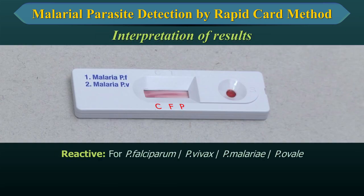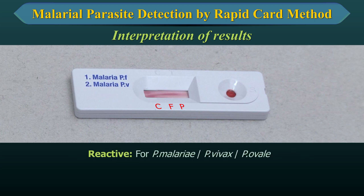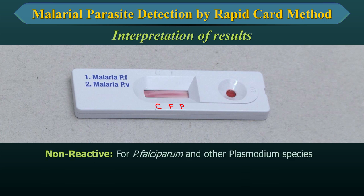Reactive results: Appearance of 3 pink colored lines, one each at P or Pan region, F or Plasmodium falciparum region, and C or control region indicates that the sample is reactive for Plasmodium falciparum, Plasmodium vivax, Plasmodium malariae and Plasmodium ovale. Appearance of 2 pink colored lines, one each at the Pan region and control region indicates that the sample is reactive for Plasmodium malariae, Plasmodium vivax or Plasmodium ovale. Non-reactive: Appearance of only one pink colored line at the control region indicates that the sample is non-reactive for Plasmodium falciparum and other Plasmodium species.